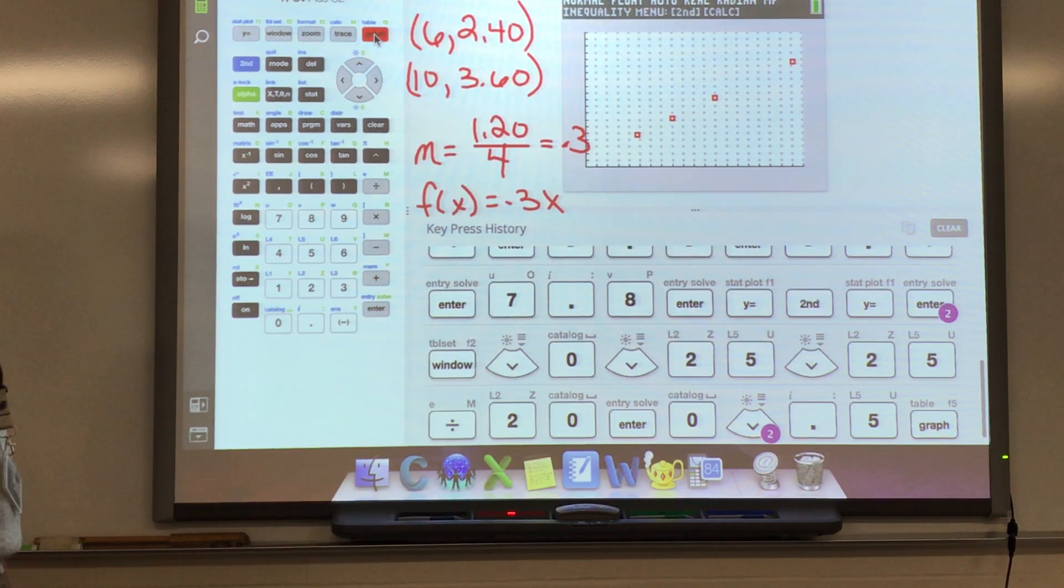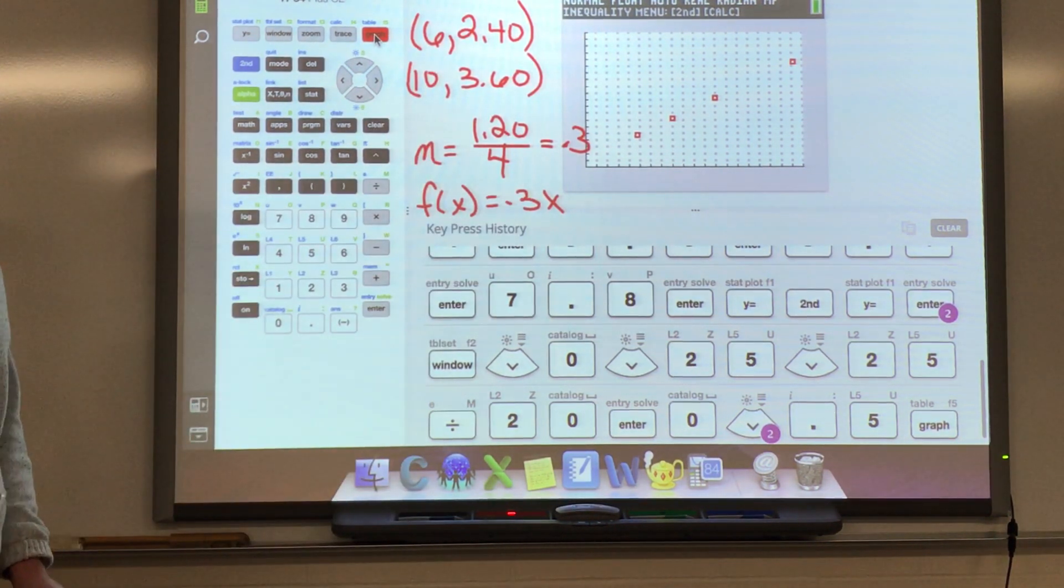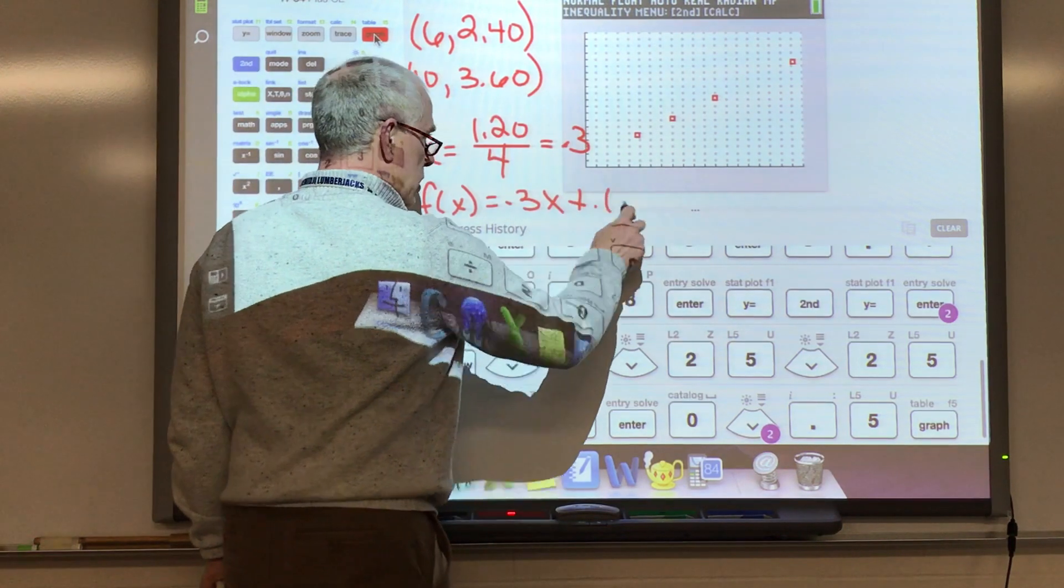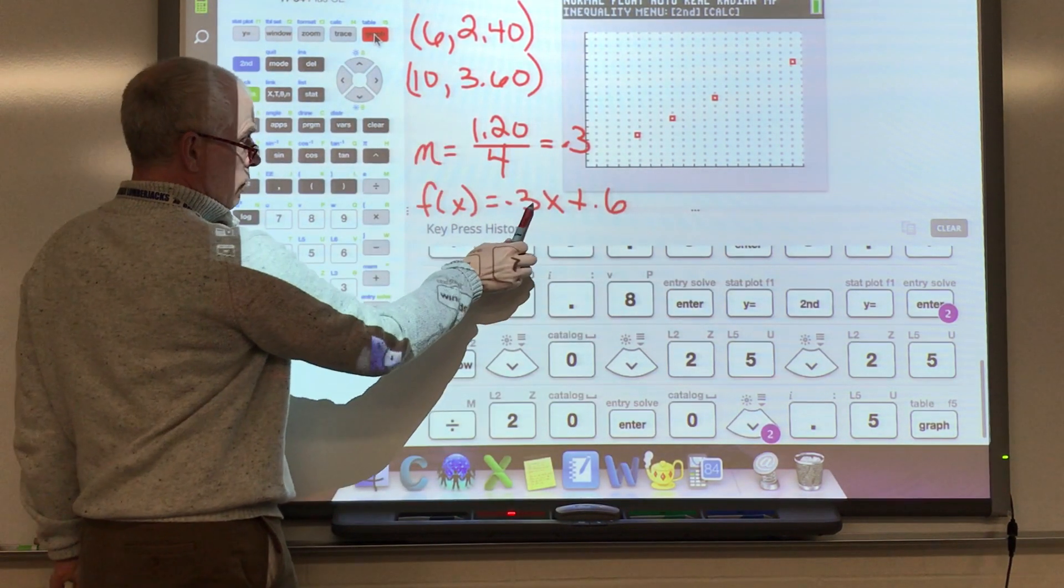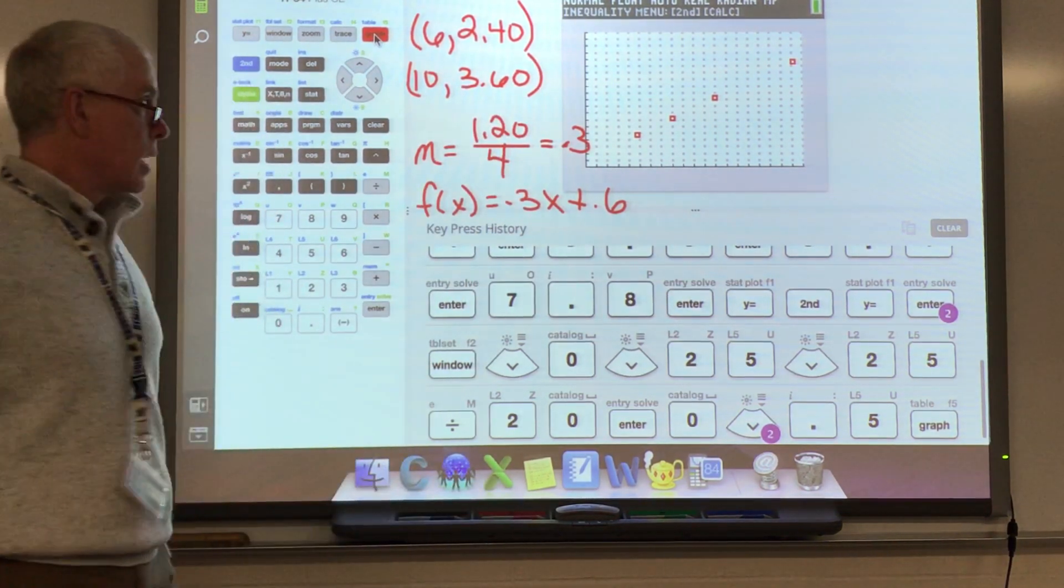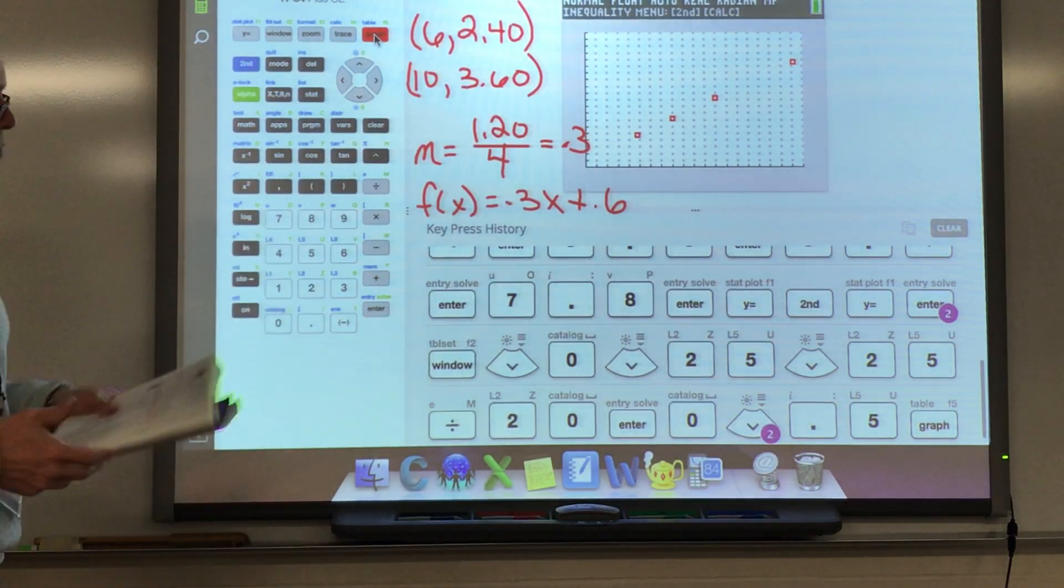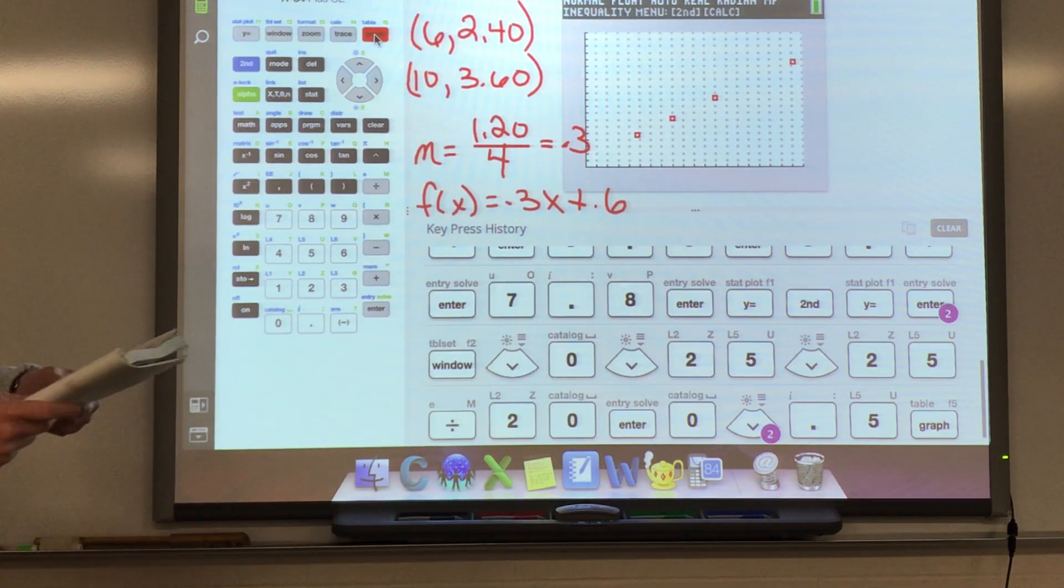Now let's just put a number in. Let's put a 6 in. 0.3 times 6 is 1.8. Well, what do I do to get from 1.8 to 2.4? I have to add 0.6. And we can double check that that works. If I put in a 10, that's 3. 3 plus 0.6 is $3.60. You could test it with the other values and you'd get that as well. So what is the equation? 0.3x plus 0.6. And this is review from algebra. You guys should be pretty good at that.